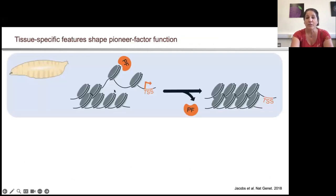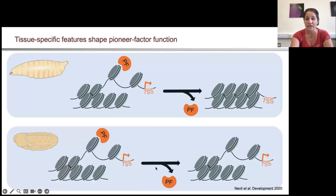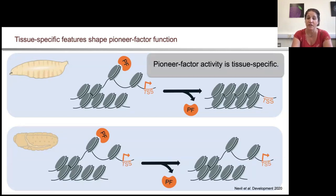However, Grainy Head is important in the larva such that if you get rid of it, there was now a loss of accessibility. But when we looked in the embryo, we didn't see the same thing — when we got rid of Grainy Head, these sites remained accessible. So what this told us was that pioneer factor activity appeared to be tissue specific. Now we have both tissue-specific binding and tissue-specific activity of these pioneer factors.